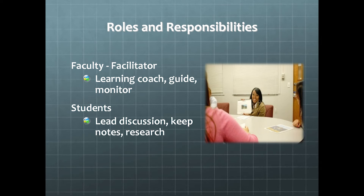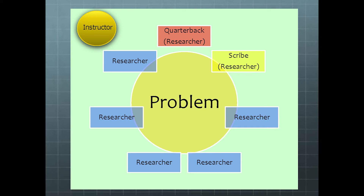In PBL, students take on the role of leading the discussion, keeping notes, and doing research. There is a quarterback who leads the discussion and also does research, a scribe who takes notes and also researches, and the rest of the group are all researchers. The quarterback role can rotate among group members across different PBLs, as can the role of scribe. Everything is situated around solving a common problem, and the instructor's role is that of the facilitator standing off to the side.